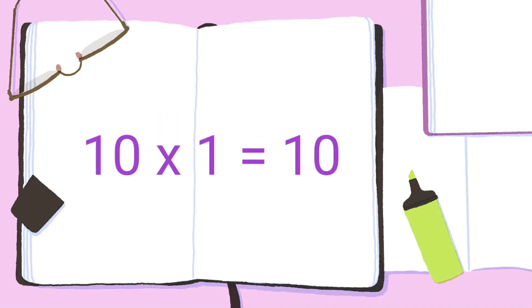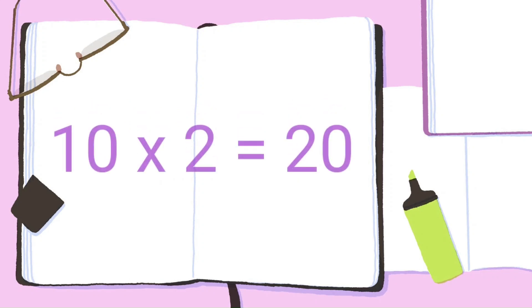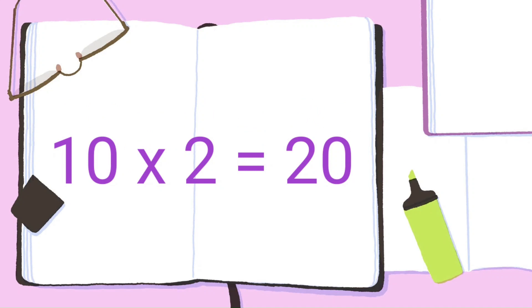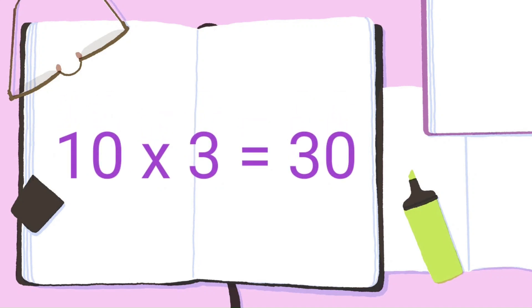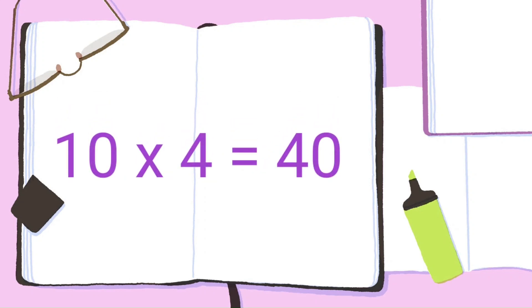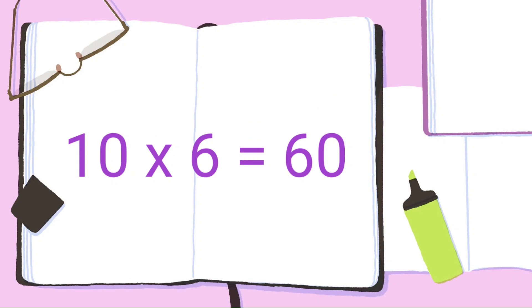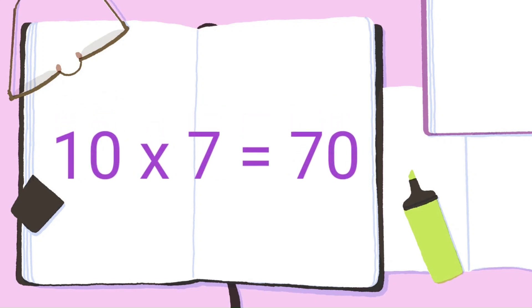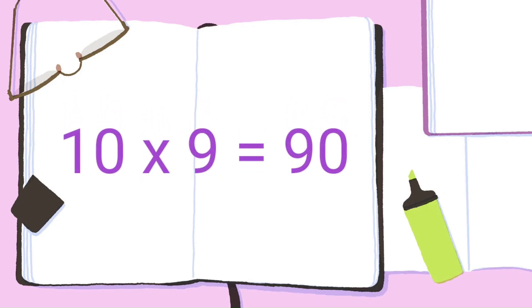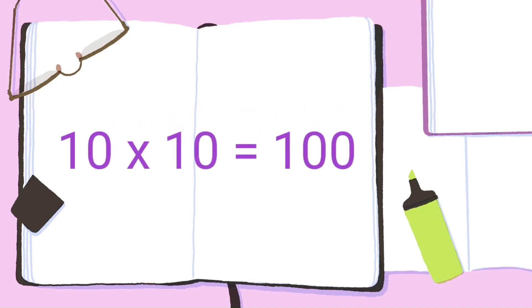10 ones are 10, 10 twos are 20, 10 threes are 30, 10 fours are 40, 10 fives are 50, 10 sixes are 60, 10 sevens are 70, 10 eights are 80, 10 nines are 90, 10 tens are 100.